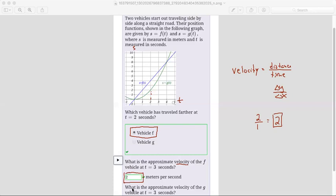Then the next question says what is the approximate velocity of the g vehicle at t equals three seconds. So the g curve is not a straight line. Since the g curve is not a straight line, we'll need to draw a tangent line.